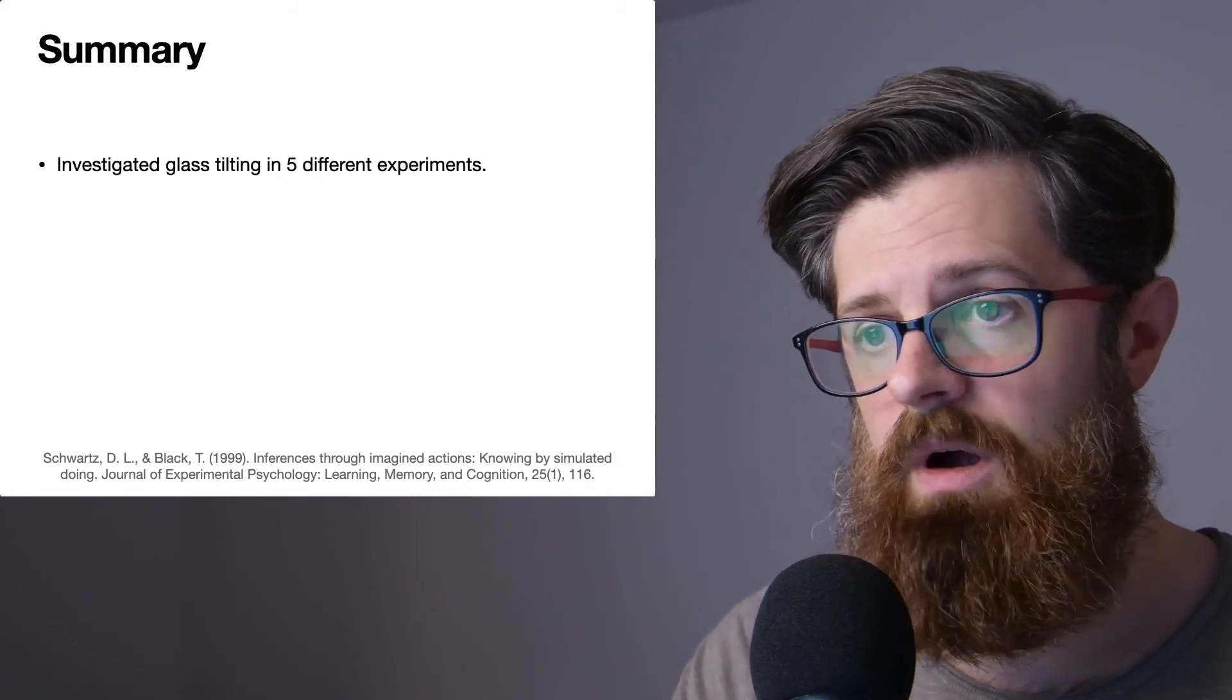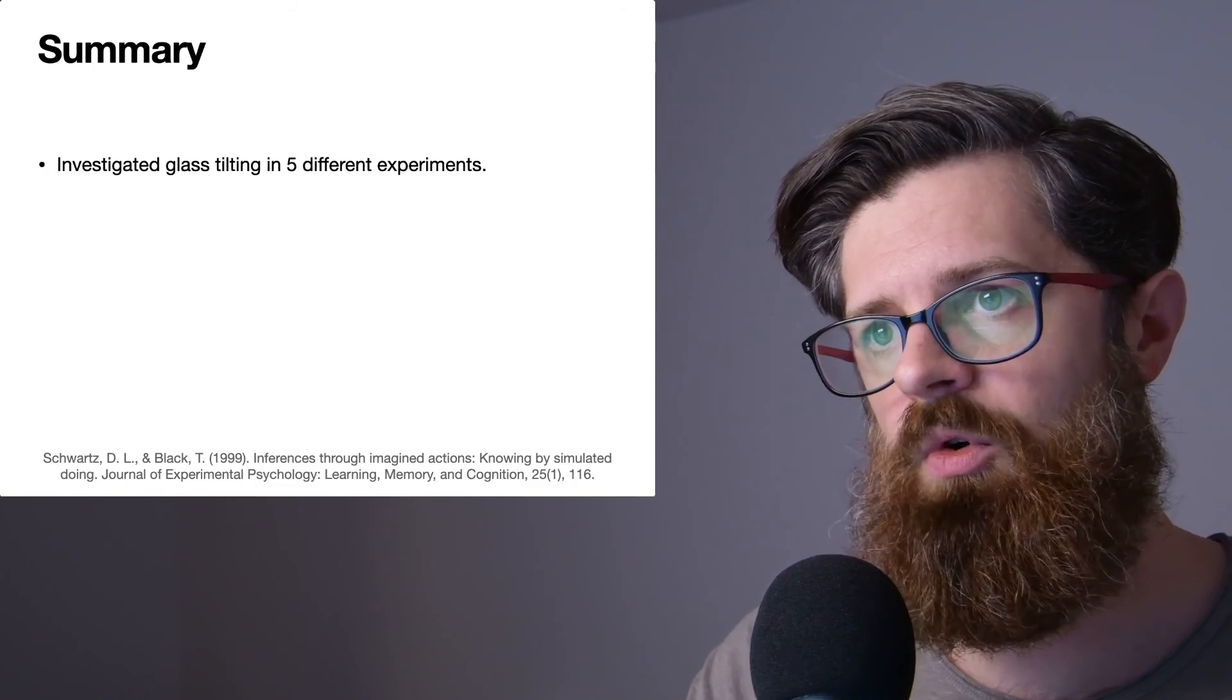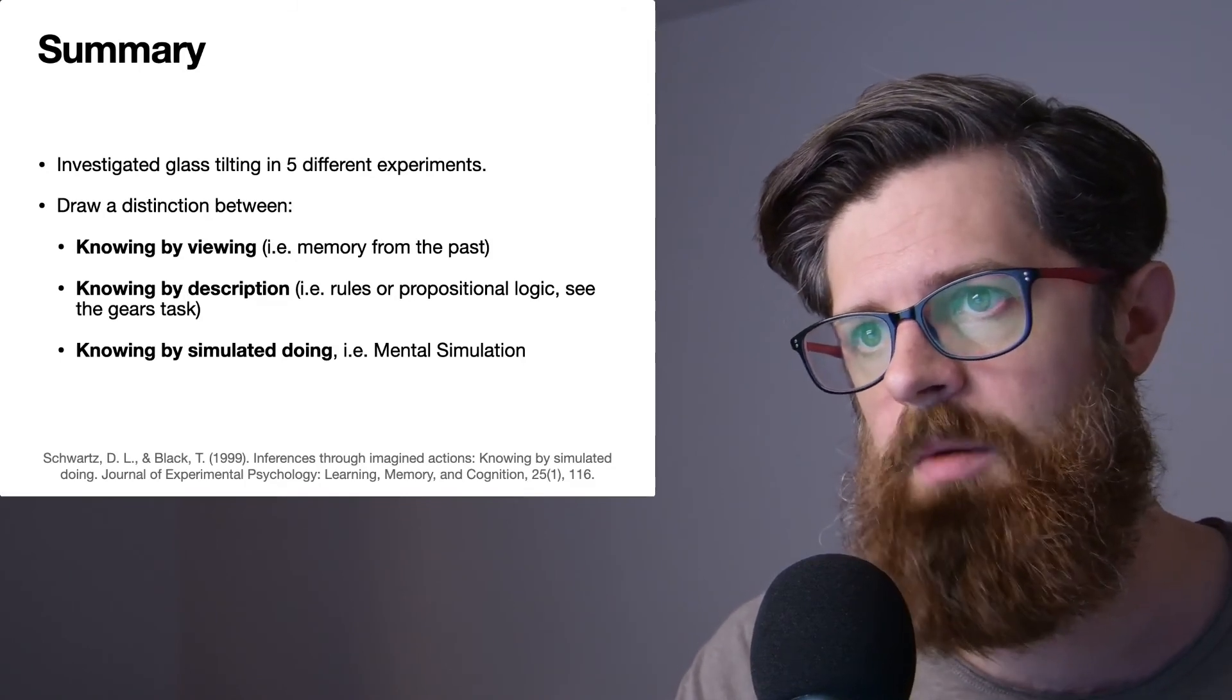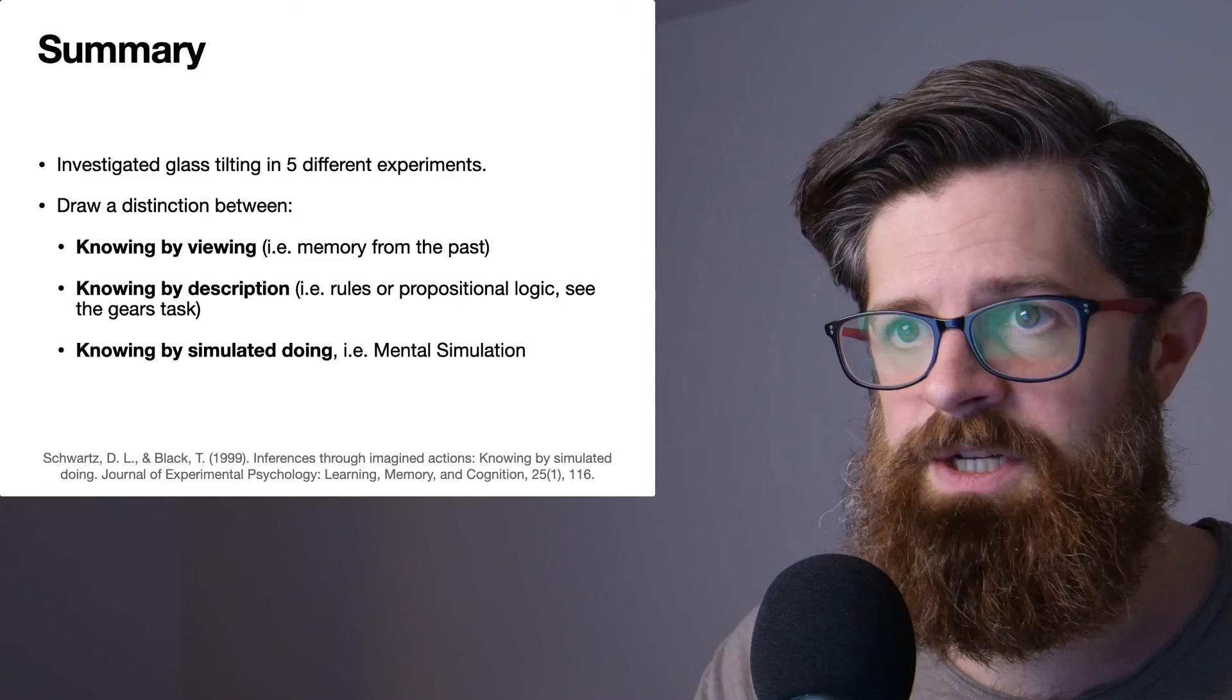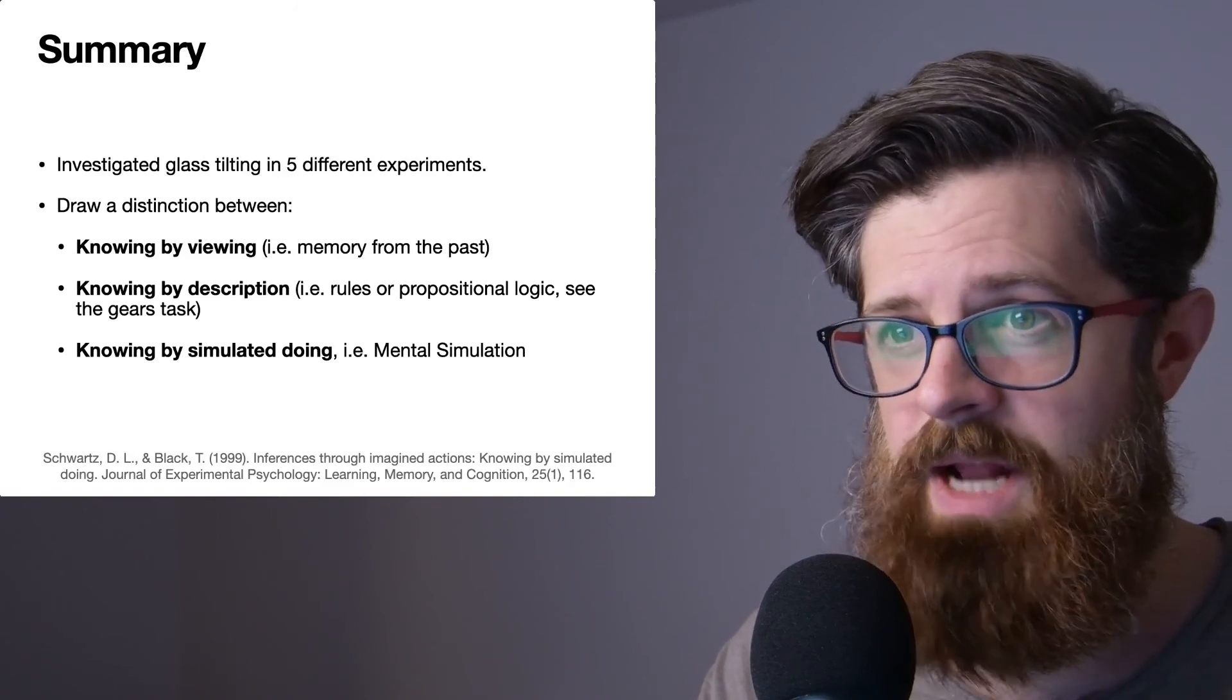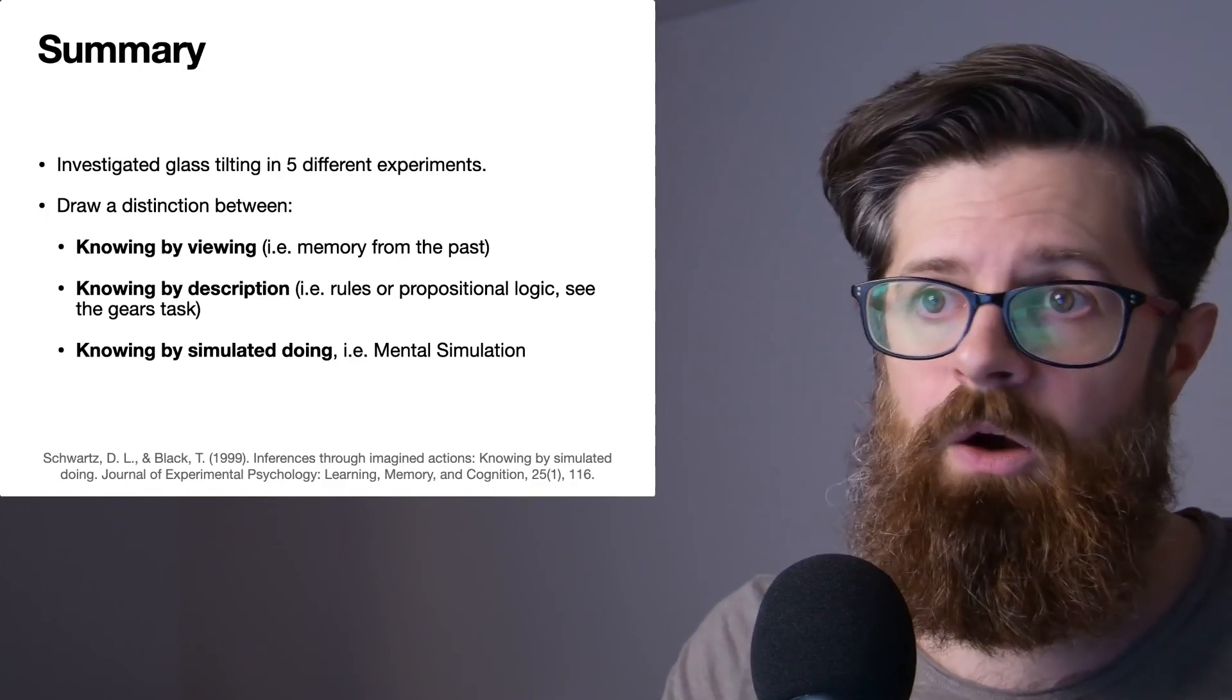So overall, I found this a really interesting paper. I've just attempted to provide a brief overview here rather than to go into the experimental details. But they basically explored five glass tilting experiments, and they really tried to draw a distinction between different ways of solving this problem. So they talk about knowing by viewing, which might be considered as memory from the past, for example. They talk about knowing by description, and so what they mean here is the use of rules, propositional logic. A good example to get your head around what that means is to think about the gears task. But then they also really try to explore this idea of knowing by simulated doing, which is also known as mental simulation.